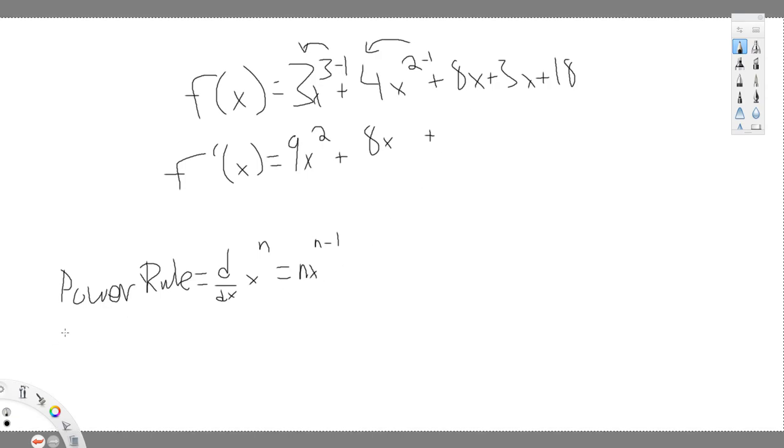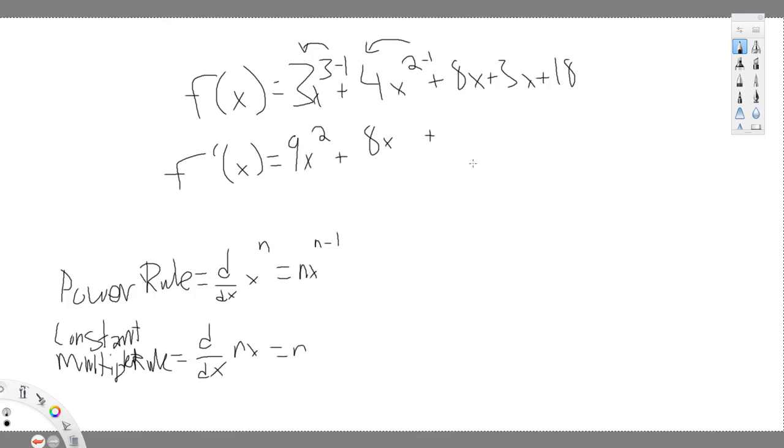Next, we're going to have to talk about the constant multiple rule. This equals. This means. Derivative of n times x equals n. So, the derivative of 8x. So, 8 is our n. The derivative of 8x is just 8. Same rule. 3.